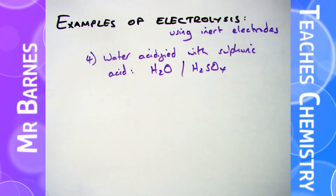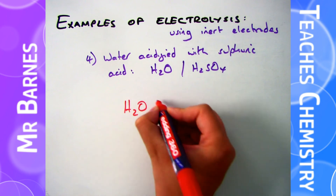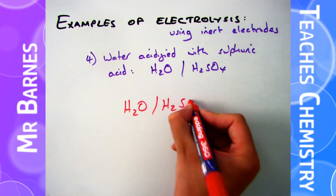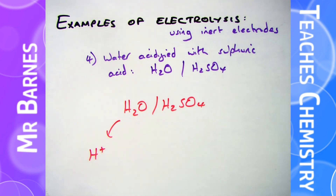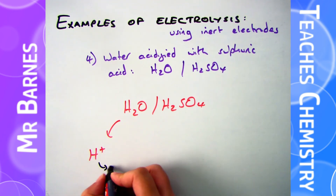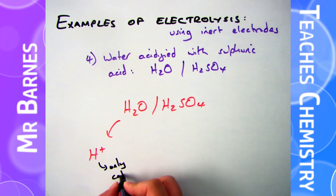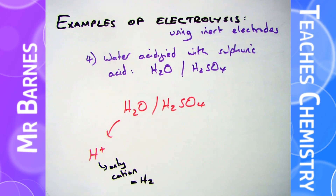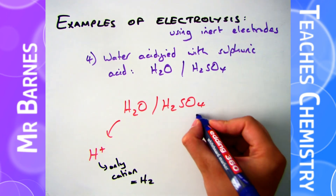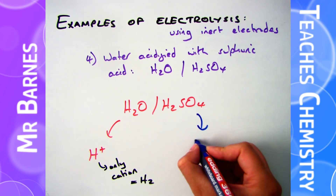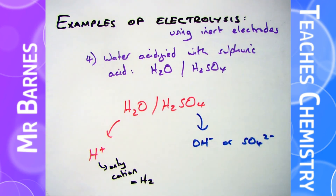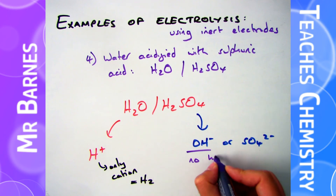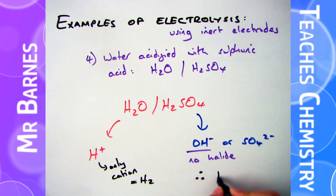Finally, let's look at water acidified with sulfuric acid - H2O and H2SO4. This is exactly the same as something being aqueous, so at the cathode I can only have H+ here; there's no metal in there so the only cation is H+, therefore I will get hydrogen at the cathode. At the anode you look: is there a halide? No - I've either got OH- or SO4 2-, neither of those are halides, therefore OH- will go to the anode and produce oxygen bubbles and water.